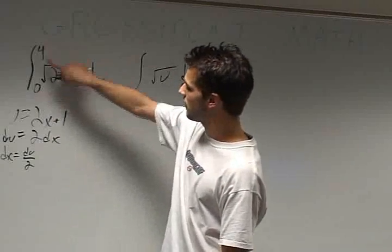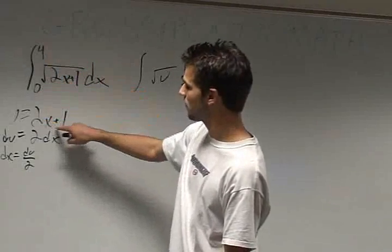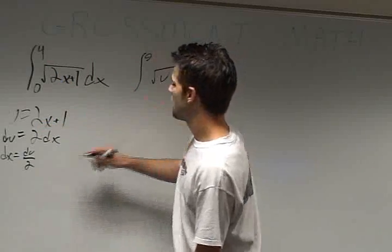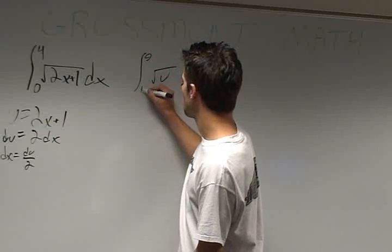To change the limits, we plug into u equals 2x plus 1. When x equals 4, we get 2 times 4 plus 1 equals 9. When x equals 0, we get 2 times 0 plus 1 equals 1.